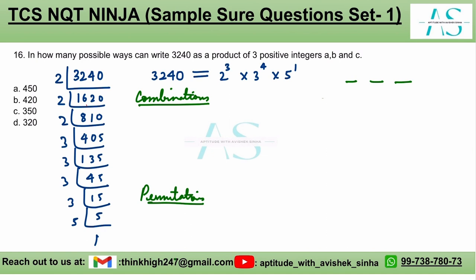For the 2s: we have 3 twos, so we apply (3 + 3 - 1) C (3 - 1), which simplifies to 5C2. And 5C2 is simply 5 × 4 divided by 2 factorial, which gives us 10 ways.